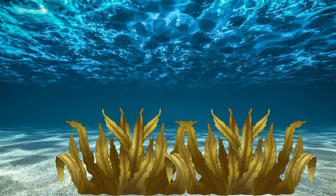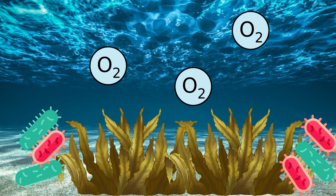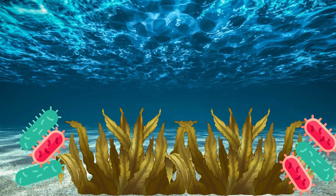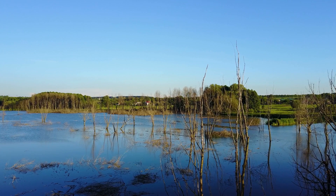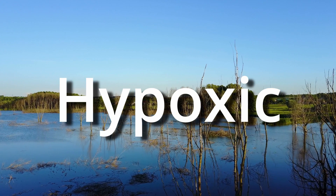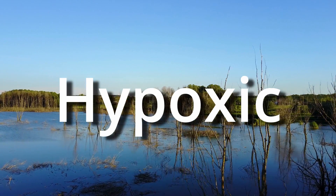Then, bacteria at the bottom of the water begin to consume all of this material, but to do so, they need to consume oxygen from the water. As the bacteria eat more and more, they use up more and more of the oxygen in the water. Eventually, there's not enough oxygen left in the water to support life. Water with so little oxygen is called hypoxic, and can lead to the type of dead zones we see in the Gulf of Mexico.